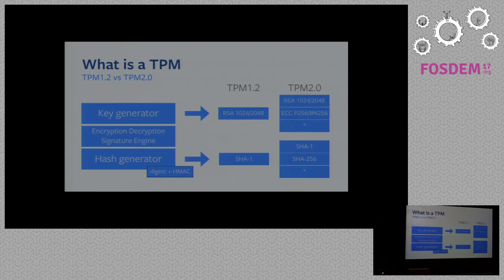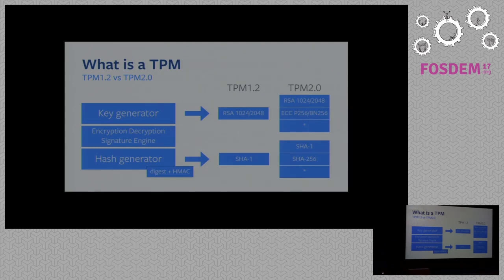There are two versions of TPMs: 1.2 and 2.0. TPM 1.2 uses RSA as asymmetric encryption and SHA-1 as the hash function — so this is deprecated, although the use of SHA-1 in TPM is not affected by the recent vulnerability discovered. TPM 2.0 has support for elliptic cryptography and SHA-2. One of the most interesting characteristics of TPM 2.0 is what is called algorithm agility, meaning we can add more algorithms without changing the specification. With a firmware upgrade from the vendor, you can get more algorithms on your TPM without changing the platform.